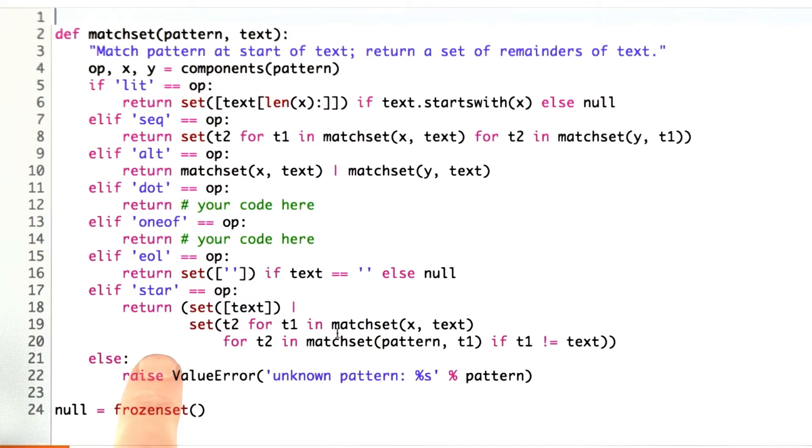Then we decide which operator we have, literal, sequence, alt, and so on, and return a proper set accordingly.